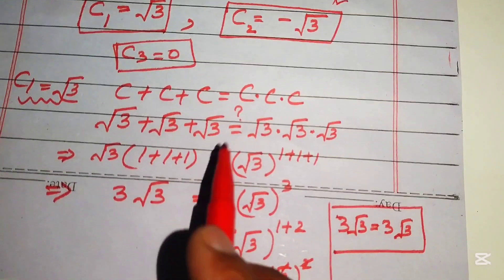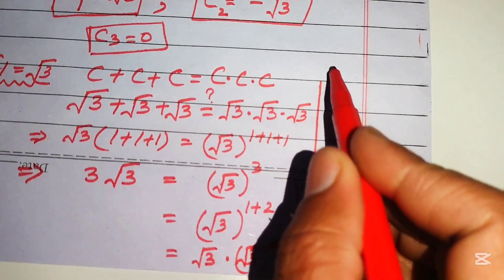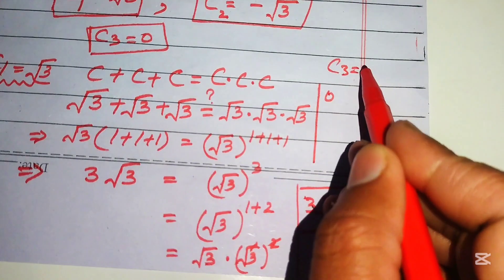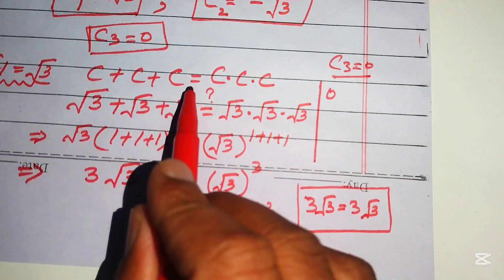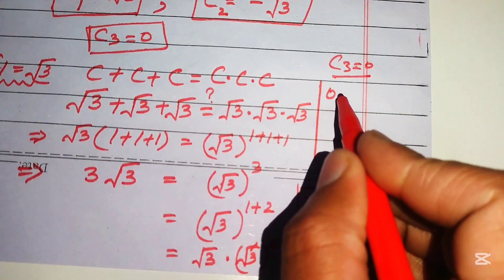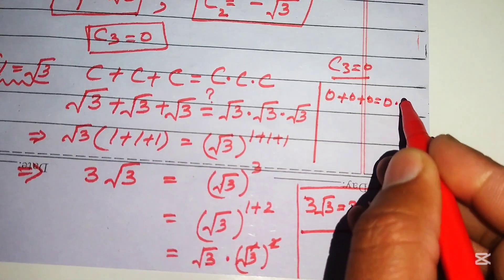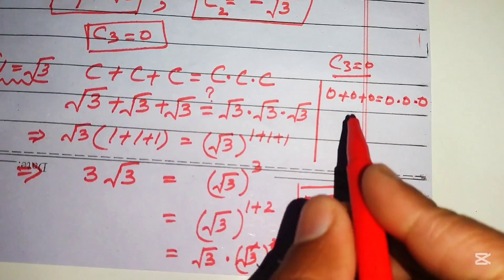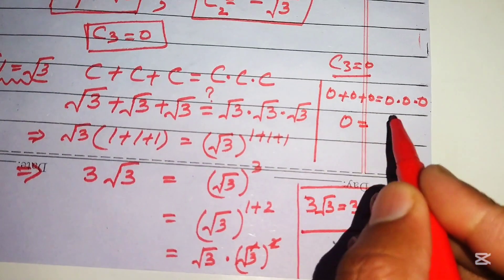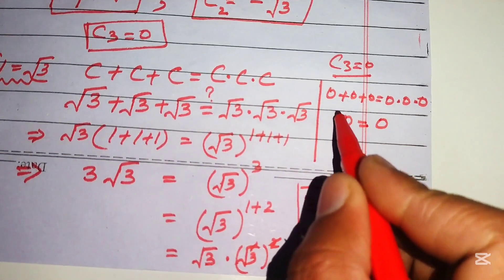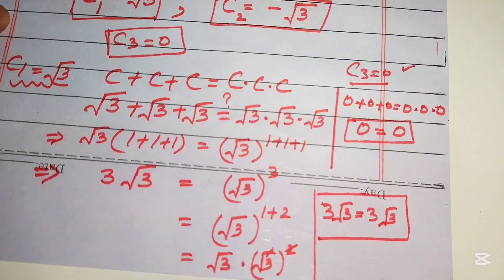Substituting c₃ equals zero into the equation gives zero plus zero plus zero equals zero times zero times zero. Adding zero three times gives zero, and multiplying zero three times also gives zero, so both sides are equal and c₃ equals zero is also a valid solution.